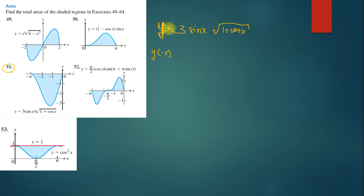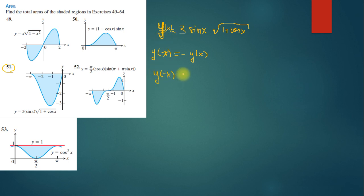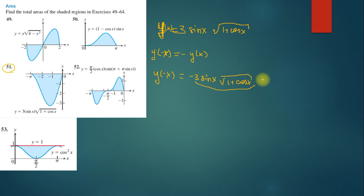Substituting -x: cos(-x) = cos(x), but sin(-x) = -sin(x), so we get -3sin(x)√(1 + cos(x)) = -y(x). This confirms the function is odd. Since it's odd, when finding the area where y < 0, we need to put a minus sign in front of that integral.